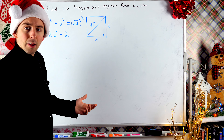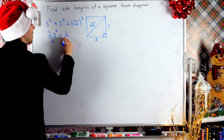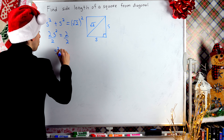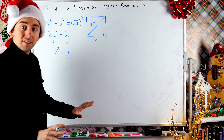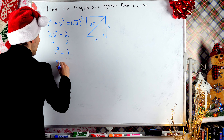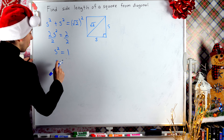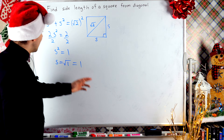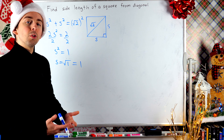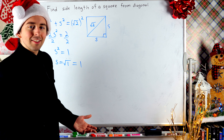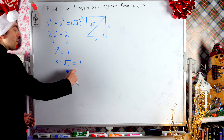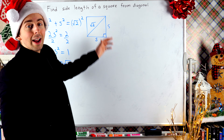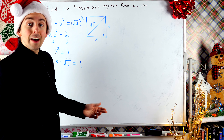Now, to continue getting S by itself, let's divide both sides of this equation by 2. Then I have that S squared is equal to 1. To finish this off, let's take the square root of both sides. So S is equal to the square root of 1, which is 1. So the side length of this square with diagonal root 2 is 1. I'll point out that since S squared is 1, S could also be negative 1, but when we're talking about geometry, we're not usually interested in negative lengths — only positive lengths make sense.